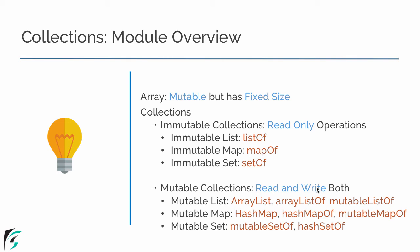We can modify the list or collection in future as well. Similarly, the array is actually mutable in nature — that is, we can modify our array in future as well. So in this video, just for the introduction, I will show you what is an array and how we can define it in Kotlin. If you understand the concept of array in this video, then from the next video onwards you won't face any difficulty understanding the list, map, and sets — both immutable and mutable.